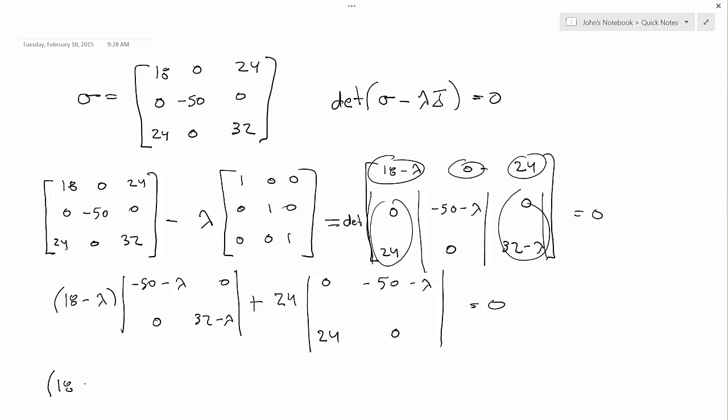So then you have 18 minus lambda, minus 50 minus lambda, 32 minus lambda, minus 24 squared, minus 50. You could multiply that all out and then solve the quadratic equation. Well, actually it's a cubic equation. So you could multiply it all out and then factor it or whatever.